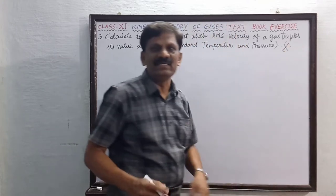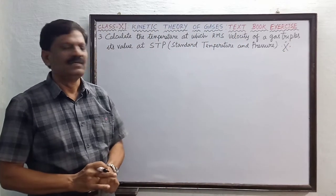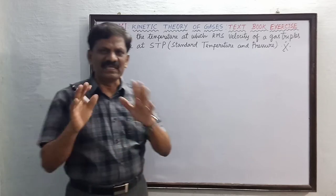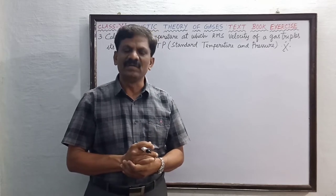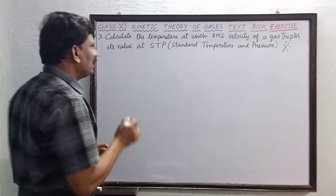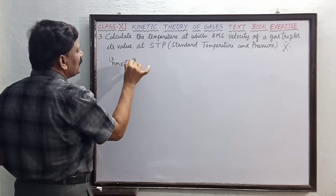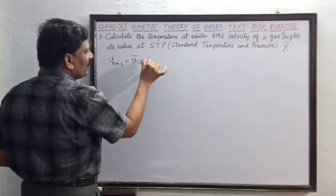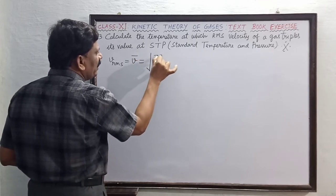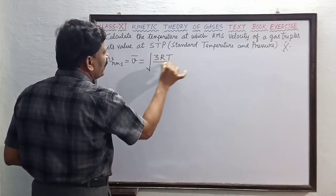The rms velocity, also written as v-bar, is equal to the square root of 3RT divided by M.